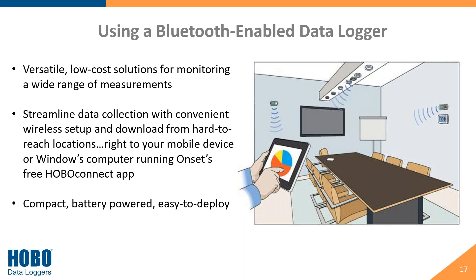I see our Bluetooth loggers frequently used for energy audits or HVAC monitoring at a client facility or school, where you need to collect data periodically — say once a week — without interrupting a classroom or office. The Bluetooth signal has about 100 feet line-of-sight range. If loggers are tucked up near an HVAC unit, nine times out of ten you can stand right outside the classroom door, open the HOBO Connect app, connect to the logger, offload the data, restart it, and move on to the next one without ever accessing the room.